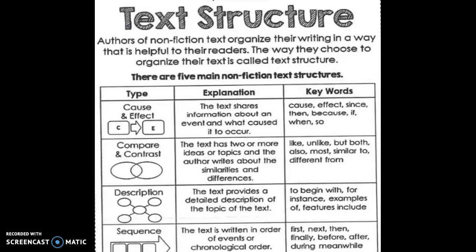The first type is cause and effect. If a person is writing about some kind of story with a reason being explained, the cause is explained and the effect of that is mentioned. In that kind of writing, the text shares information about an event and what caused it to occur. The keywords used in this type of writing are: cause, effect, since, then, because, if, when, and so.